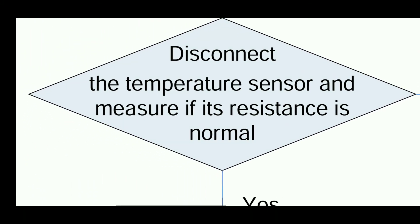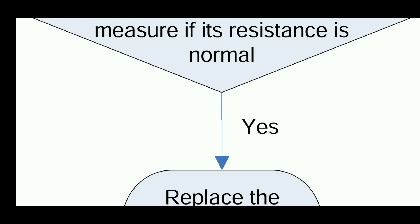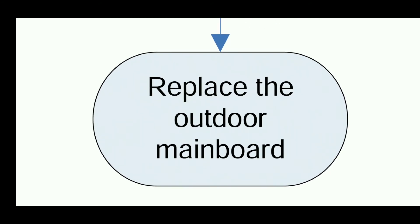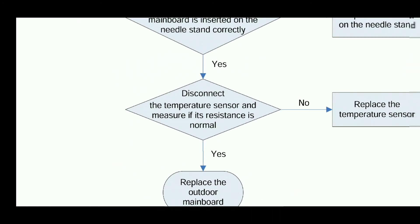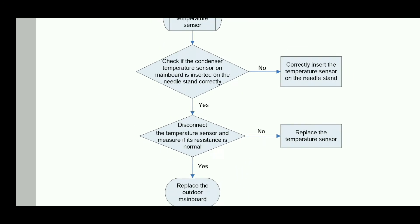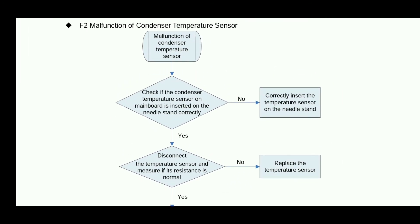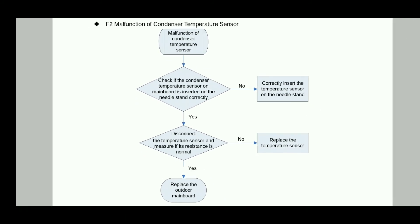If the sensor value is already good, then at the end you have to replace the outdoor mainboard. I'm going to show you the whole flowchart on the display — this is the complete flowchart of the F2 error in Gree inverter air conditioner.